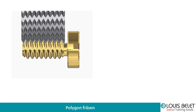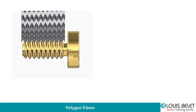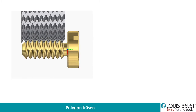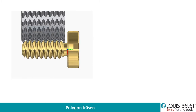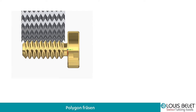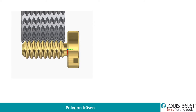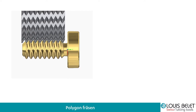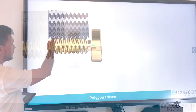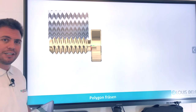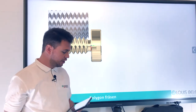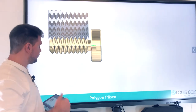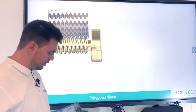Hier die Simulation: Der Fräser hat eine Eintauchoperation und das Profil – also das Gegenstück der Schraube – wird auf dem Fräser geschliffen und der schneidet dann das Gewinde auf der Schraube. Man sieht schön an der Animation die Steigung, also wie sich die Schraube bewegt und der Fräser ebenfalls. Man hat einen Gewinde-Einlauf und -Auslauf.